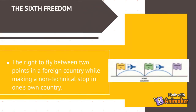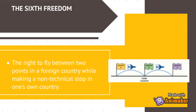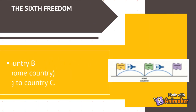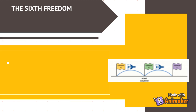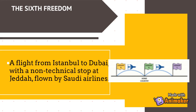The sixth freedom is the right to fly between two points in a foreign country while making a non-technical stop in one's own country. A flight from country B stops at home country A, then continues to country C. For example, a flight from Istanbul to Dubai with a non-technical stop at Jeddah, flown by Saudi Airlines.